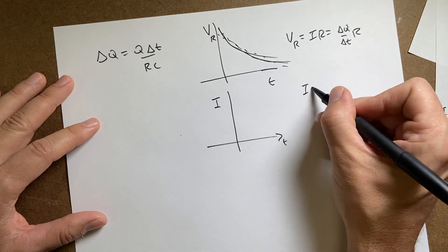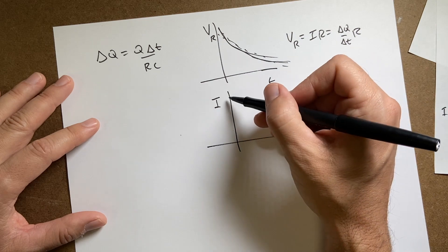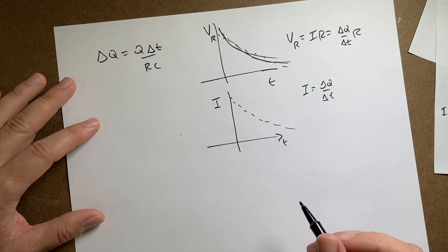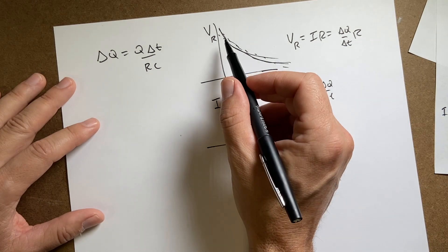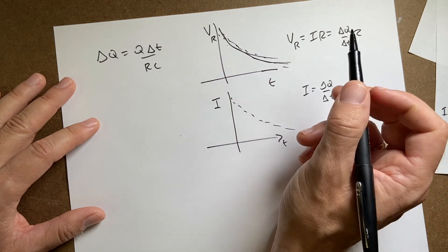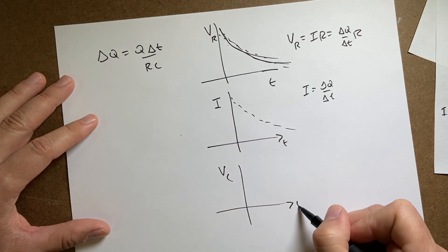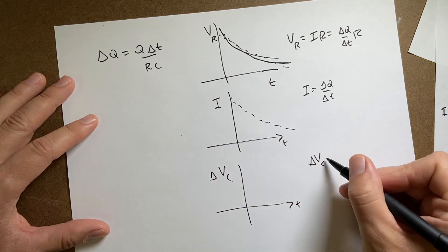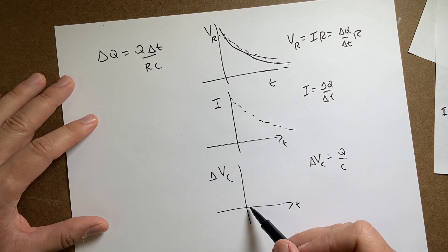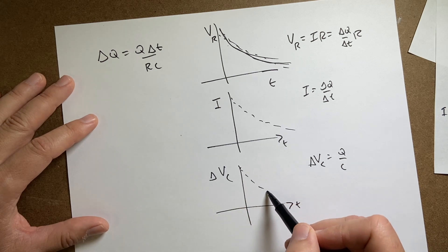The voltage across the capacitor for this discharging case should also decrease because the charge decreases. If I want to plot the voltage across the capacitor as a function of time, ΔV_C equals Q/C, and I know Q and C so I can plot that. It's going to start off high and go down low. It turns out that the voltage across the capacitor as a function of time equals V₀·e^(-t/RC). We can plot this function as well and compare.